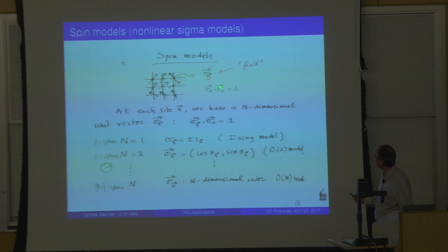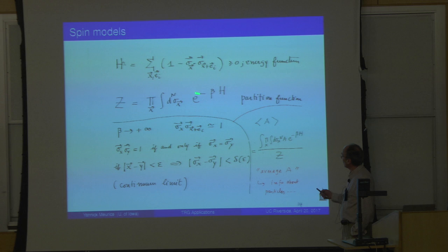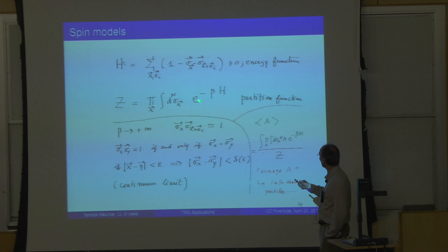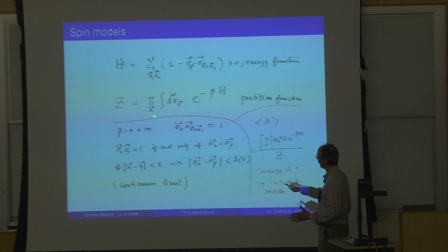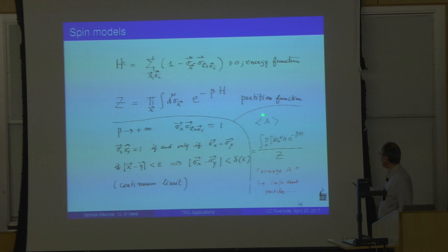The main goal is to calculate the partition function by integrating over these fields with Boltzmann weight — or equivalently an action. If you interpret the lattice as d spatial dimensions plus one Euclidean time dimension, you can think of it as a Feynman path integral. You insert observables into the path integral to get averages — that's what you want to calculate.